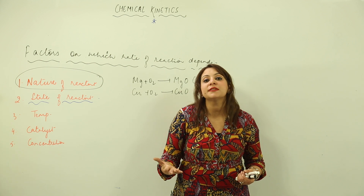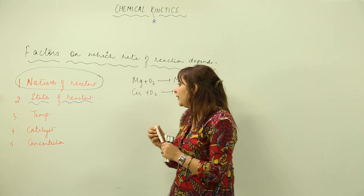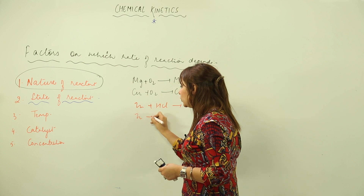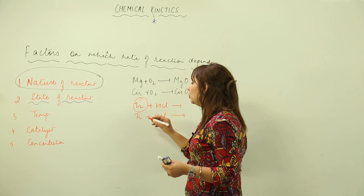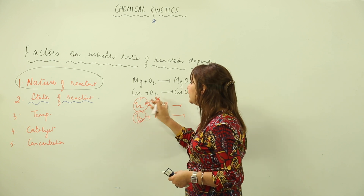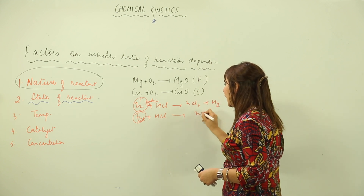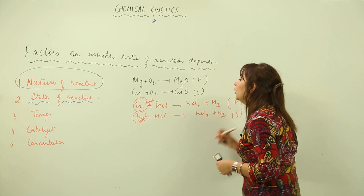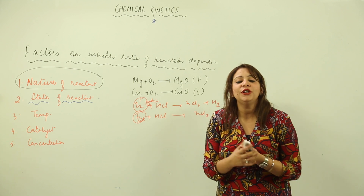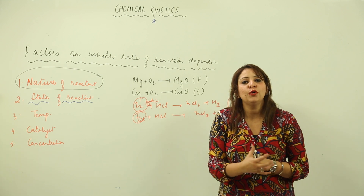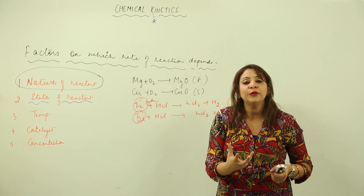There is one more point about state: consider two reactions — Zn plus HCl using a zinc strip versus zinc powder. In both cases, zinc chloride and hydrogen are formed, but the reaction with zinc powder is faster than with the zinc rod. The reason is that for effective collision to happen there must be more area of contact, and greater surface area is available in powder form than in rod form. So the form in which reactants are used also matters.